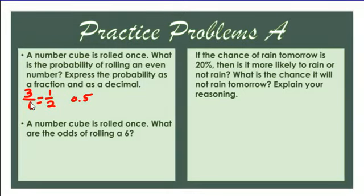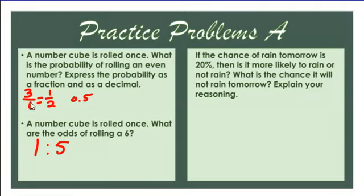A number cube is rolled once. What are the odds of rolling a six? It says odds, so I use a colon. There is one six on the cube. How many outcomes are not a six? Five. So the odds are one to five.